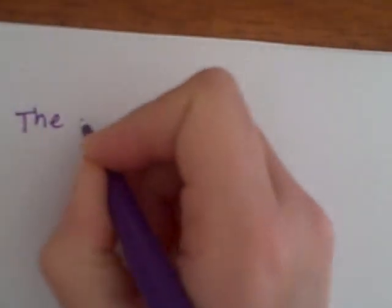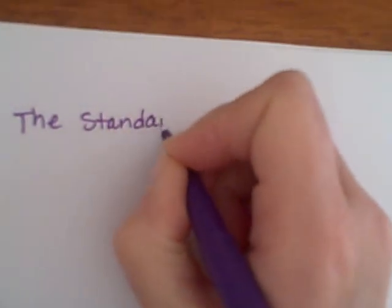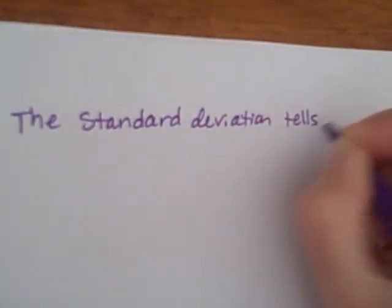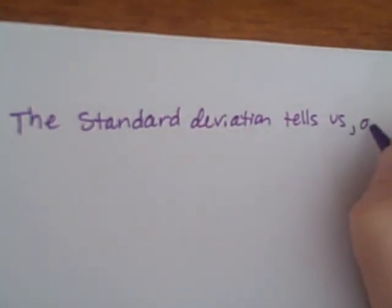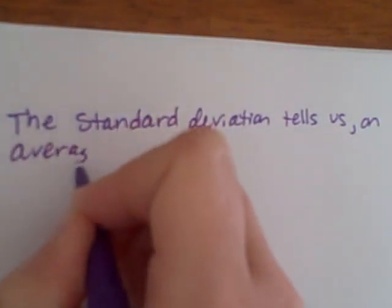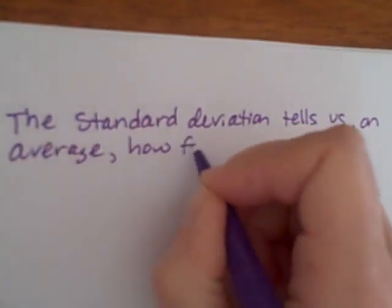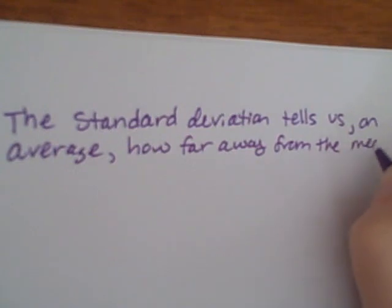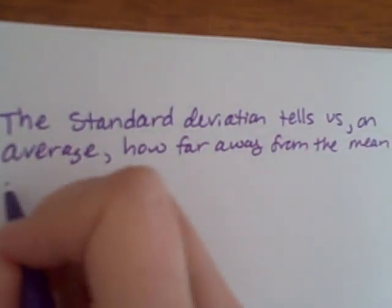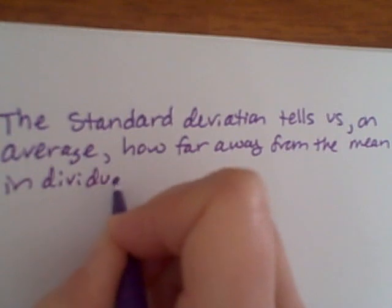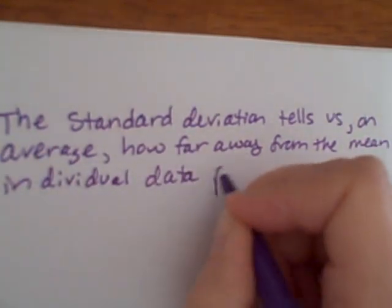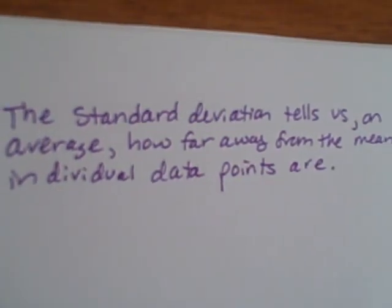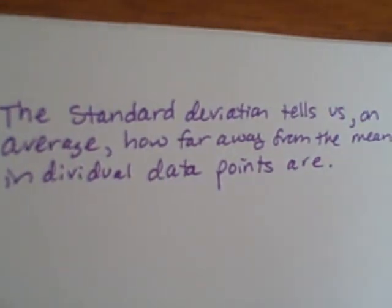The question becomes: why is this the formula we're using and what is it actually telling us? The standard deviation tells us, on average, how far away from the mean individual data points are.